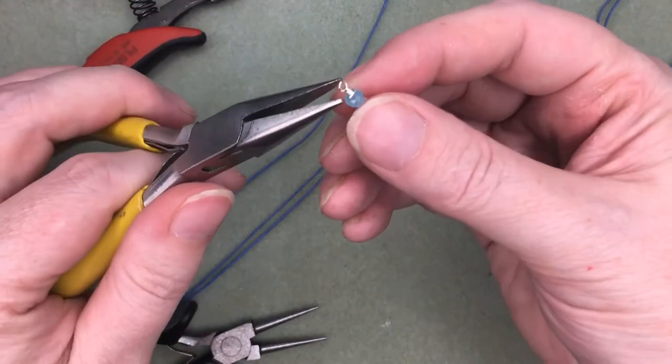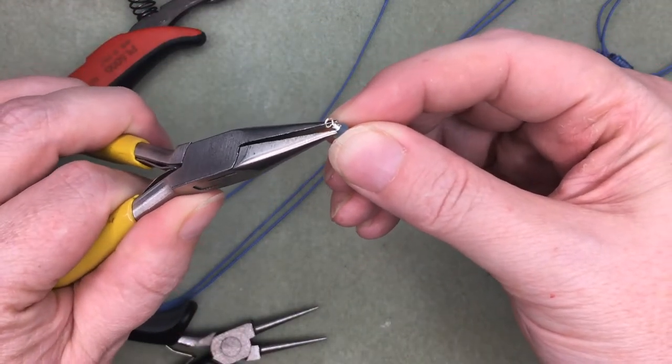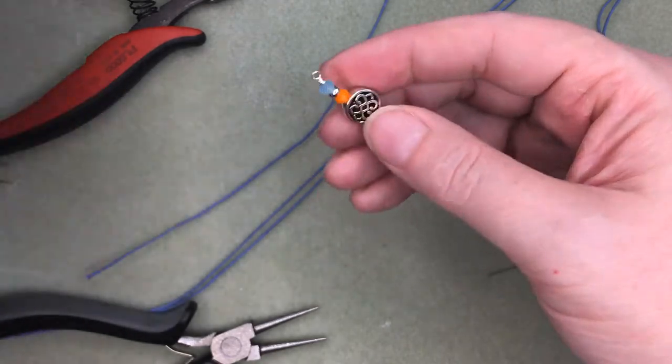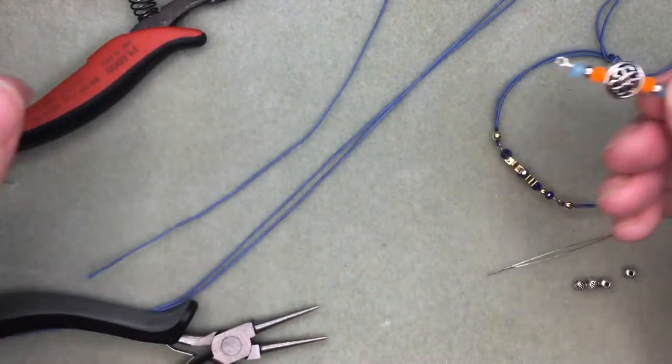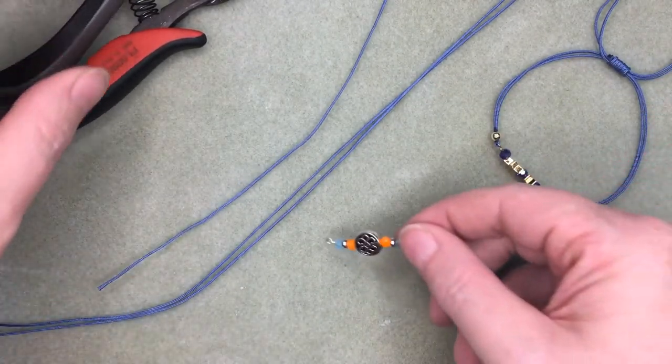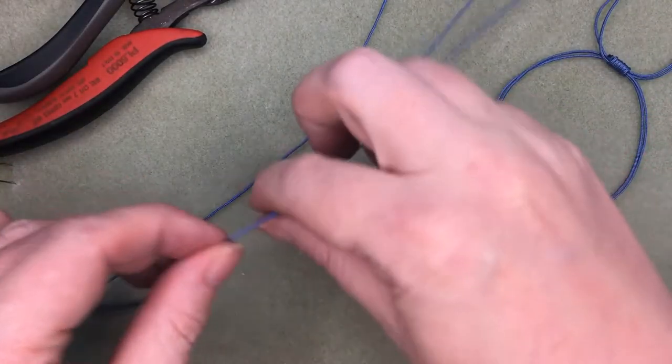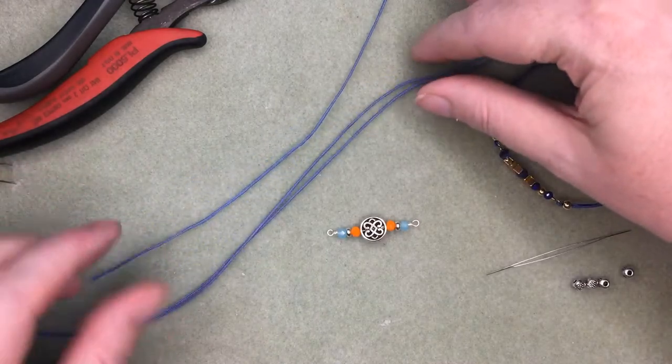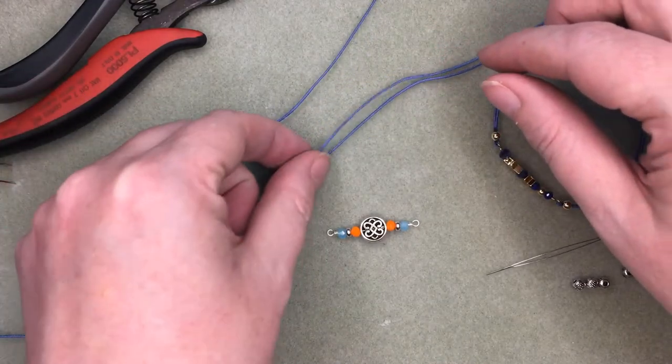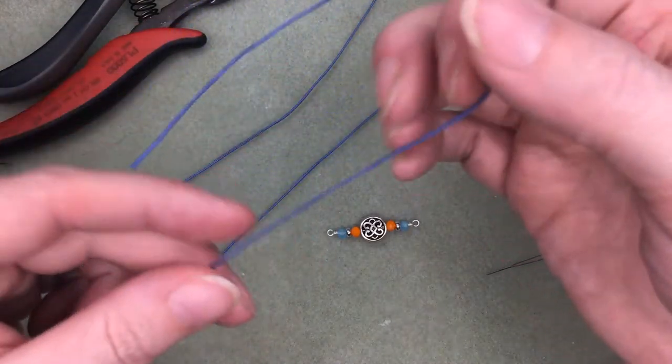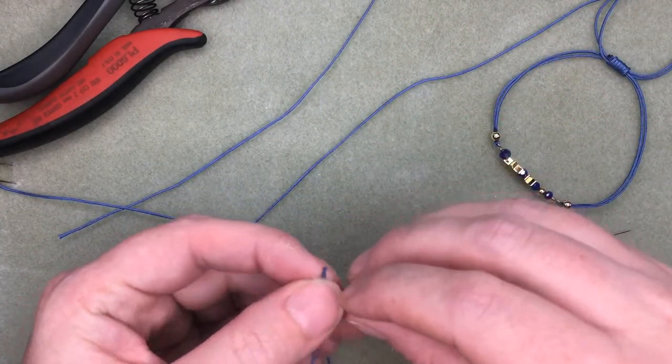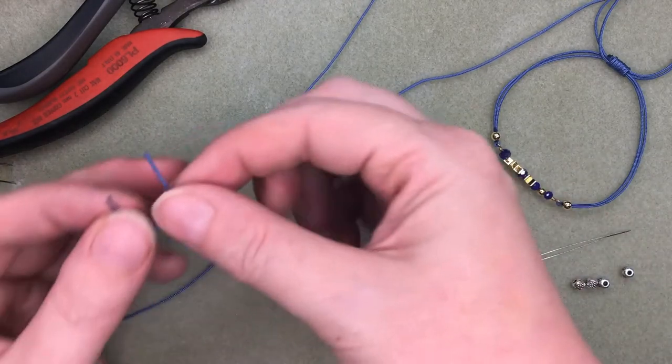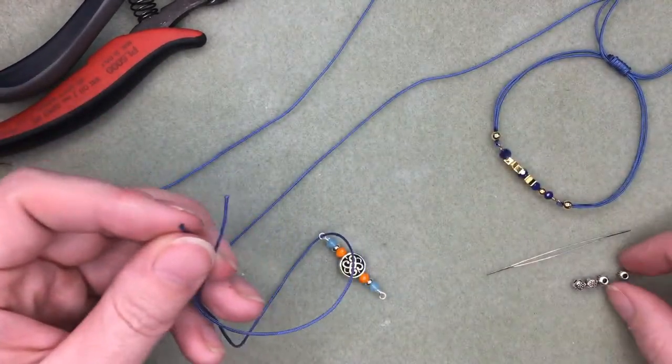And I'll just use my needle nose pliers here to tuck that end back in. Okay, so there's my centerpiece done. Now moving on to the cording, I have two pieces here that are cut at 30 centimeters and one piece that's cut at 20 centimeters. So the two 30 centimeter pieces are gonna be the two sides, so they're gonna come through.